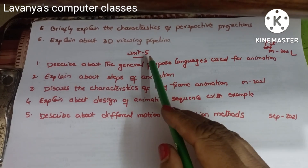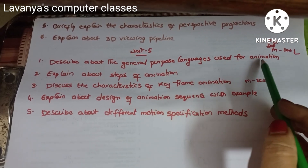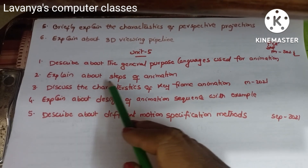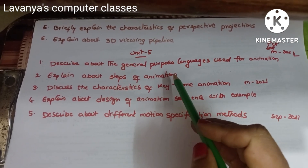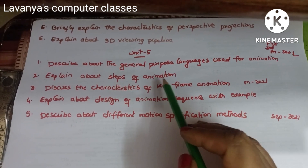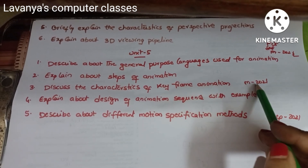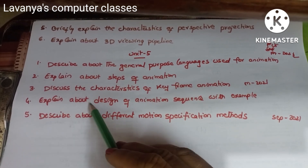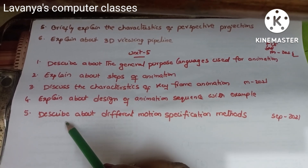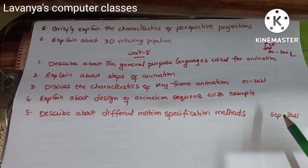Unit 5 is totally about animations. Important questions: Describe about the general purpose languages used for animation — came in February 2022. Explain about steps of animation. Discuss the characteristics of keyframe animation — March 2021 question. Explain about design of animation sequences with examples. Describe about different motion specification methods — September 2021.